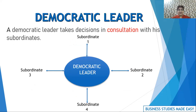Next is the democratic leader. We live in a democracy, and a democratic leader is a person who takes decisions after consulting everybody. As you can see in this diagram, communication is both ways — even the subordinate can communicate. Before coming to a decision, he consults the people who are going to undertake the work, and then arrives at a decision. This is called a democratic decision.